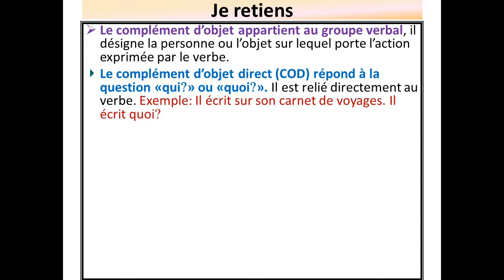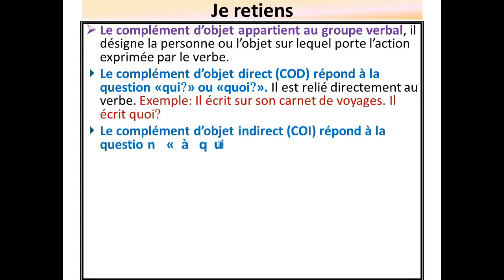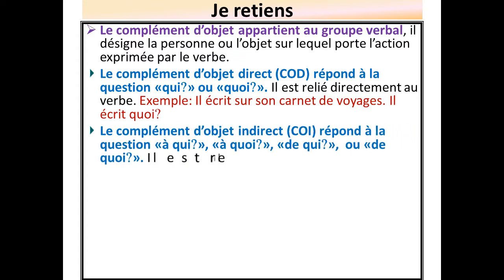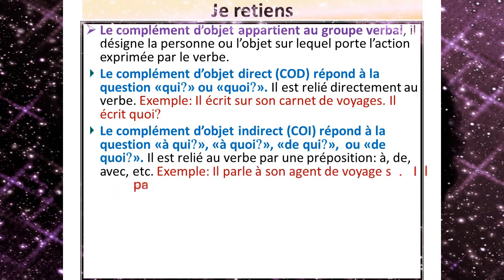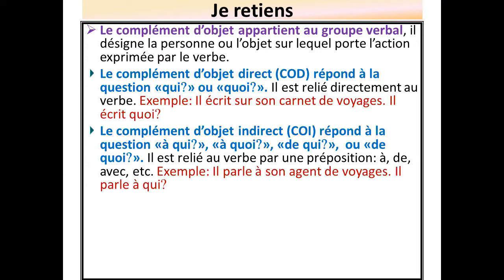Exemple : il écrit sur son carnet de voyage. Il écrit quoi ? Le complément d'objet indirect répond à la question « à qui », « à quoi », « de qui » ou « de quoi ». Il est relié au verbe par une préposition : soit la préposition « à », soit la préposition « de », soit la préposition « avec », et il y en a d'autres. Exemple : il parle à son agent de voyage. Il parle à qui ?